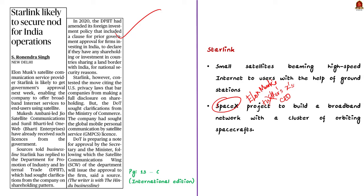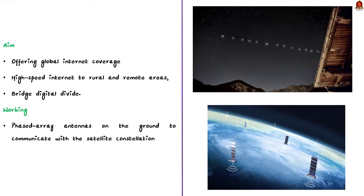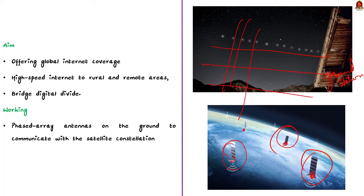The simple idea behind Starlink is that companies or governments send up small satellites into space that beam high-speed internet to users with the help of ground stations or terminals back on Earth. These small satellites are built into a broadband network with a cluster of orbiting spacecrafts. The primary objective of Starlink is to offer global internet coverage, especially in areas where traditional internet infrastructure is challenging to implement, bridging the digital divide in rural and remote areas.